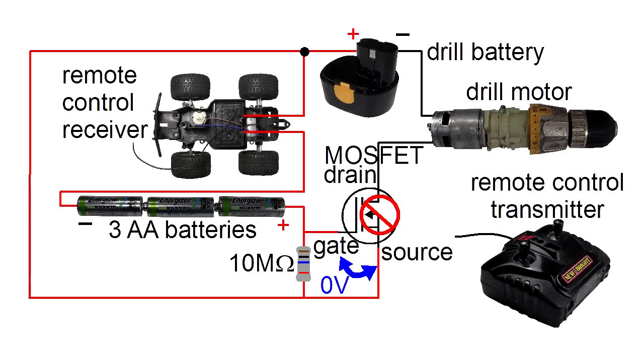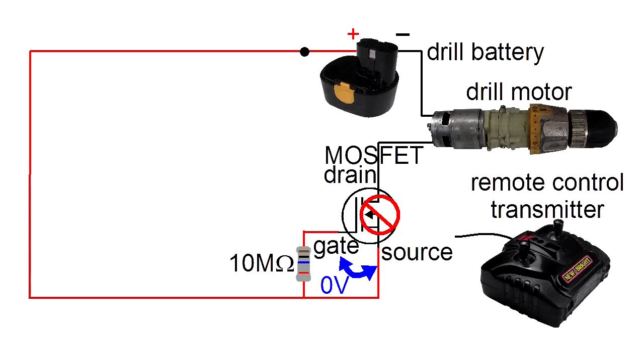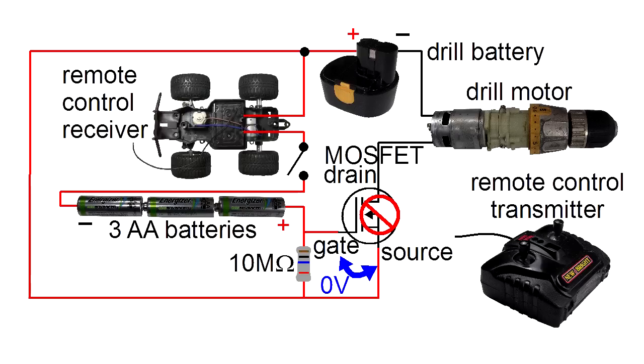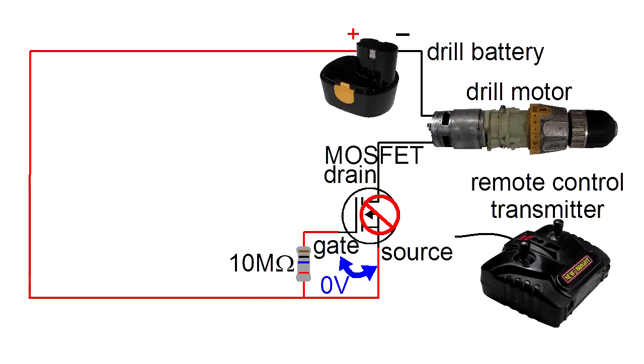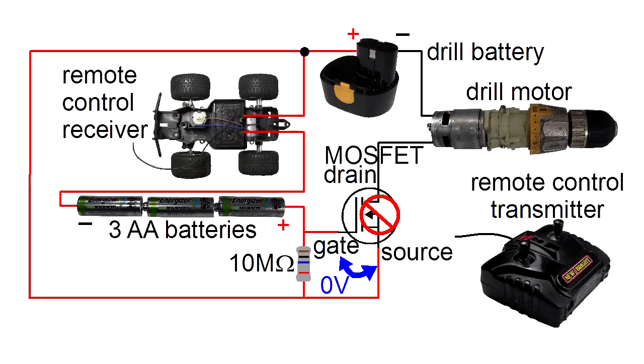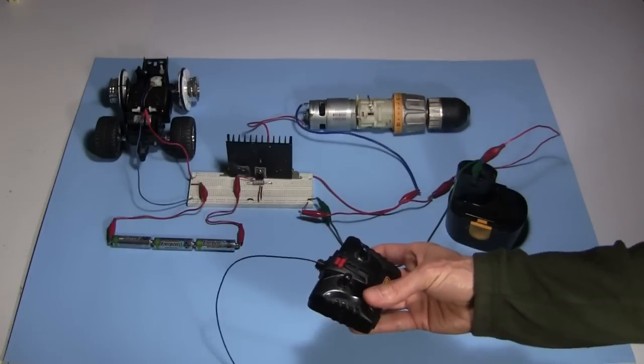When the remote control is off, then it's as if this part isn't here, or it's as if there's a switch there and the switch is open. Essentially we have this. And that means the gate and source are directly connected together and to the positive of the drill battery. This resistor doesn't affect that in this case. Since the gate and source are at the same voltage, no current is allowed to flow between the drain and source, and the drill stays off.